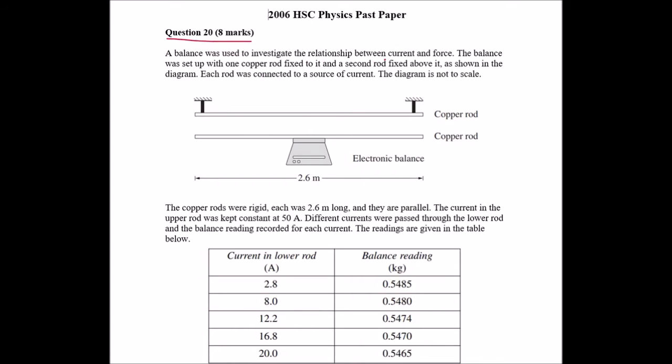A balance was used to investigate the relationship between current and flux. The balance was set up with one copper rod fixed to it and a second rod fixed above it, as shown in the diagram. Each rod was connected to a source of current, the diagram is not to scale.